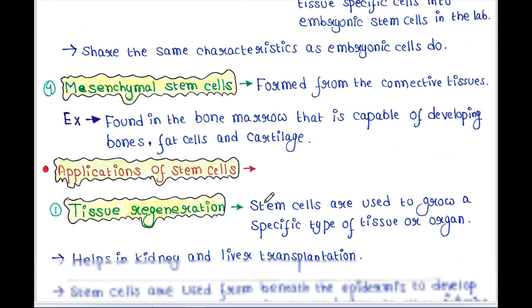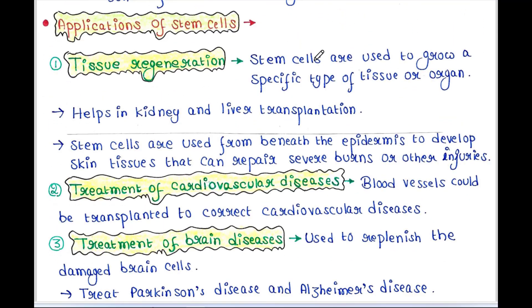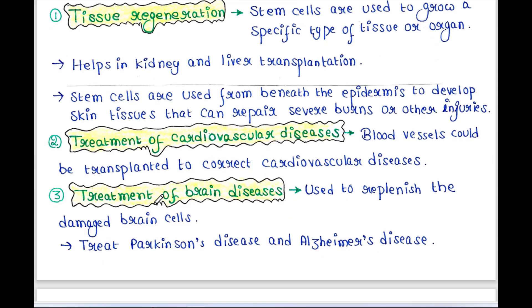Let's see some applications of stem cells. First is tissue regeneration — stem cells are used to grow a specific type of tissue or organ, helping in kidney and liver transplantation. Stem cells are also used from beneath the epidermis to develop skin tissues that can repair severe burns or other injuries. Additionally, blood vessels could be transplanted to correct cardiovascular diseases.